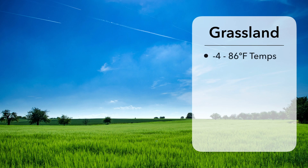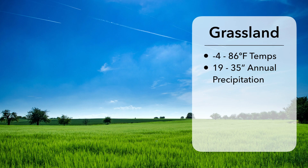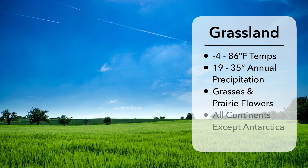The way you can know if you're in a grassland biome has to do with the temperature, which ranges from negative four to 86 degrees on average. They have between 19 and 35 inches of annual precipitation or rainfall. And while you won't find many trees, there are many different types of grasses and prairie flowers. Grasslands can be found on every continent except Antarctica.